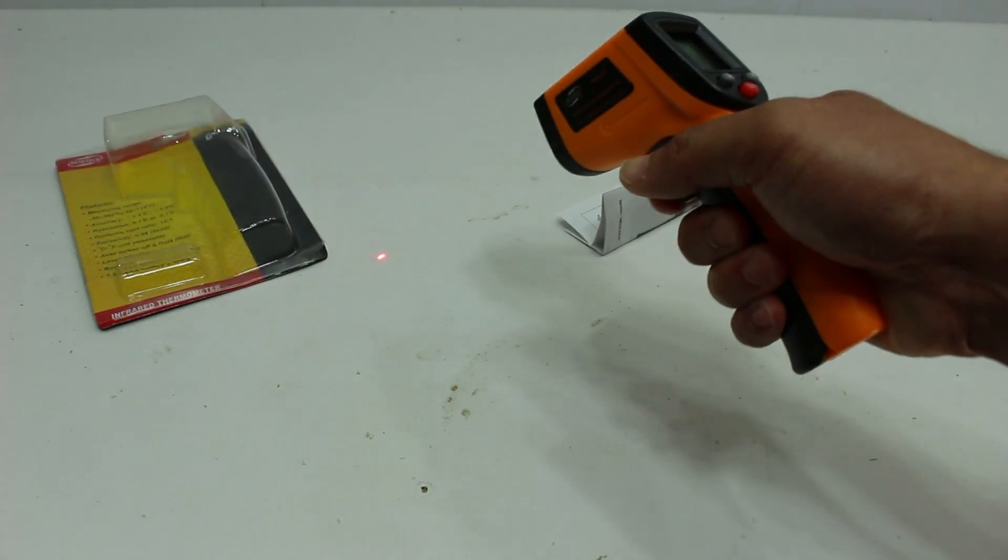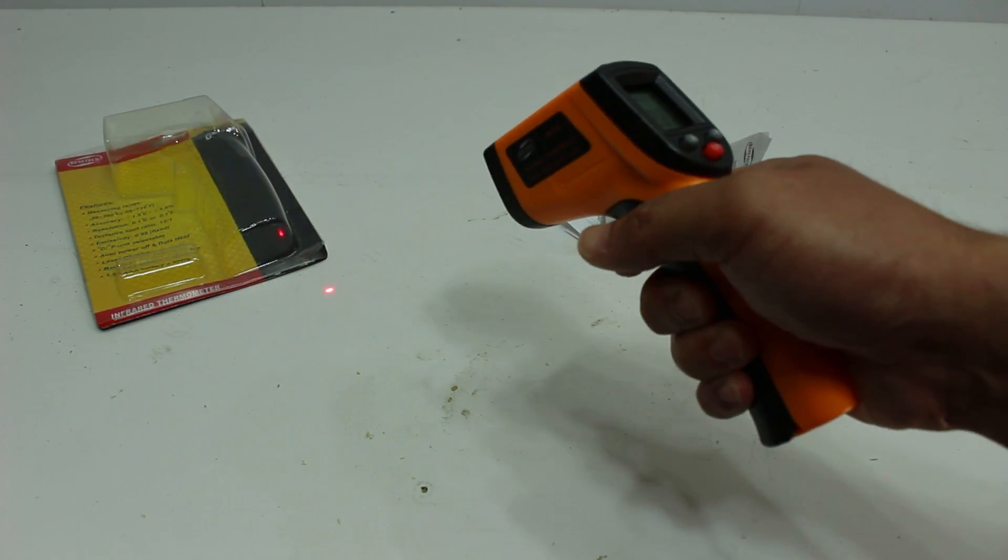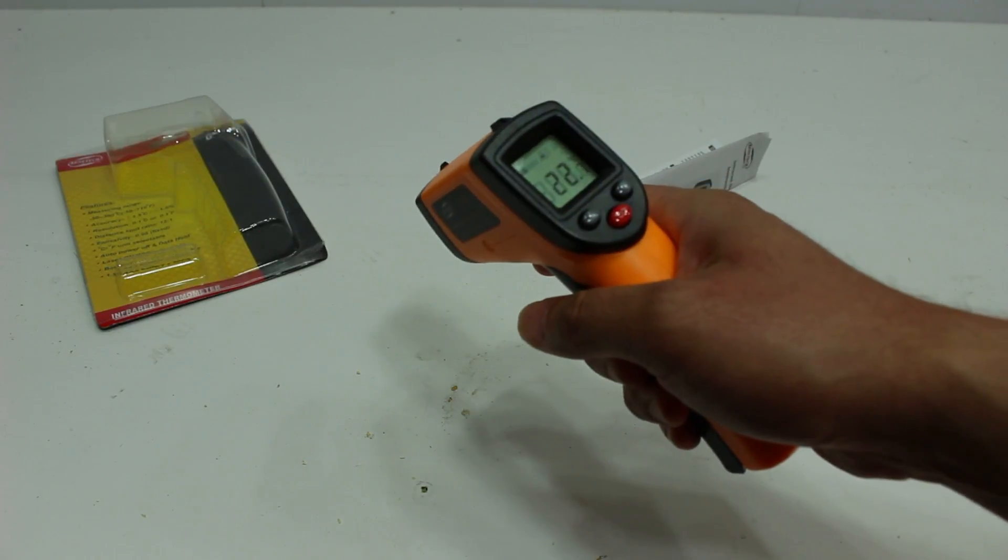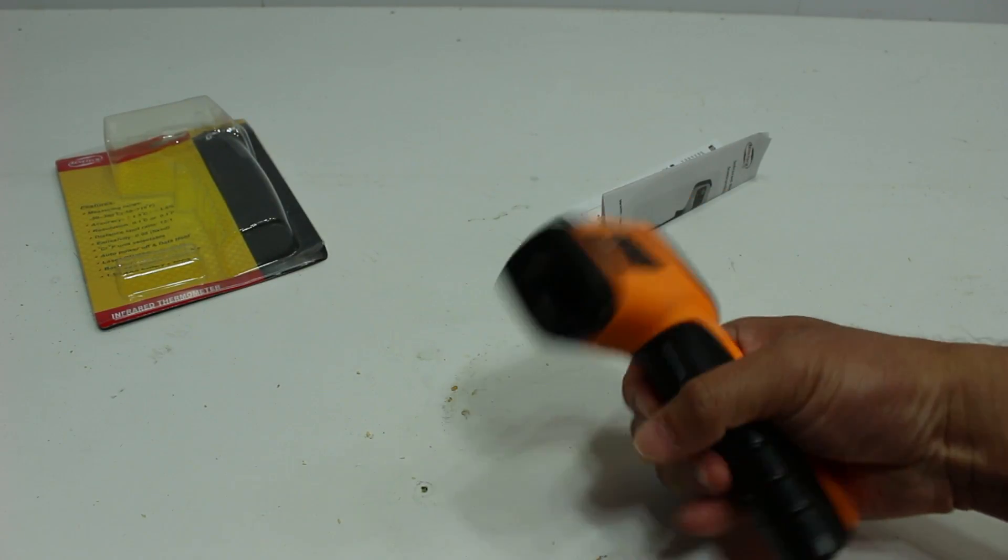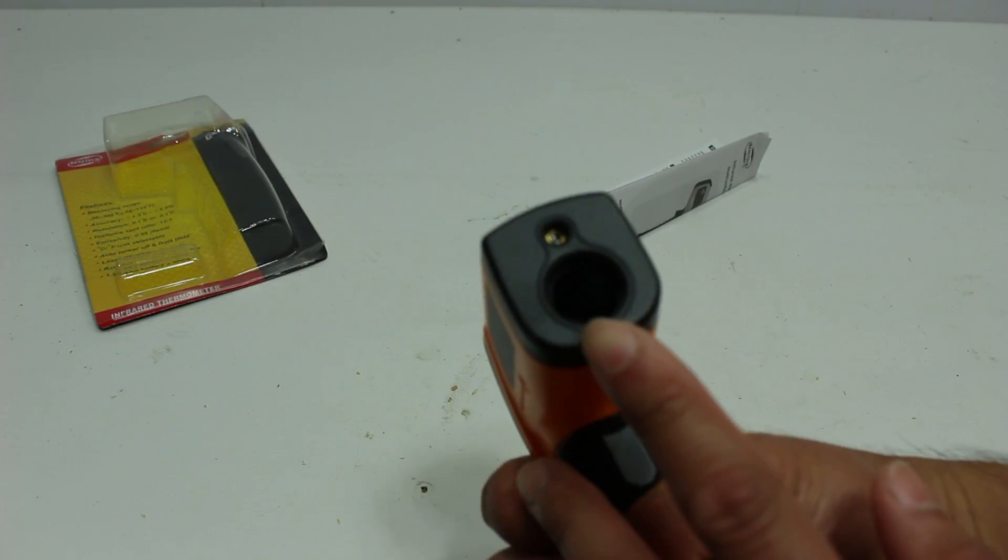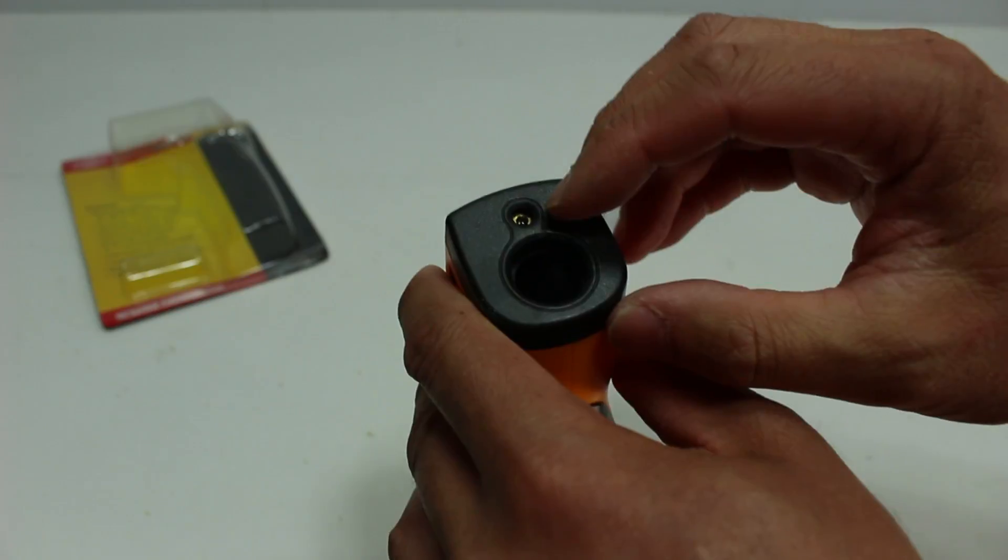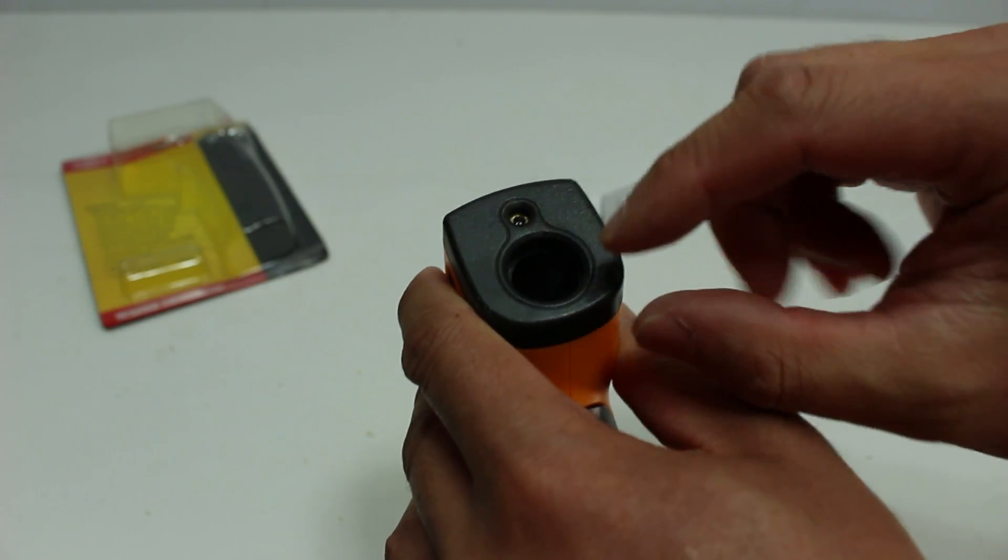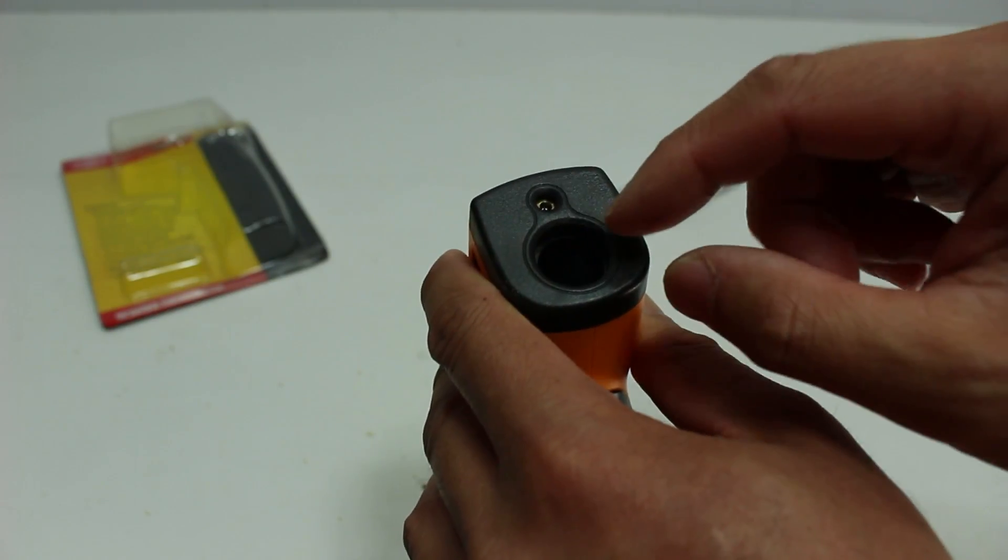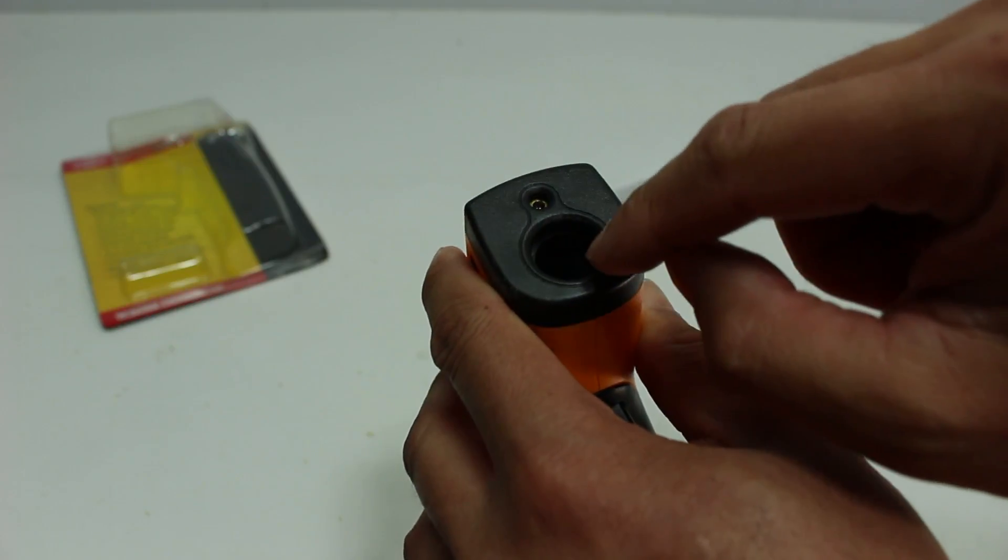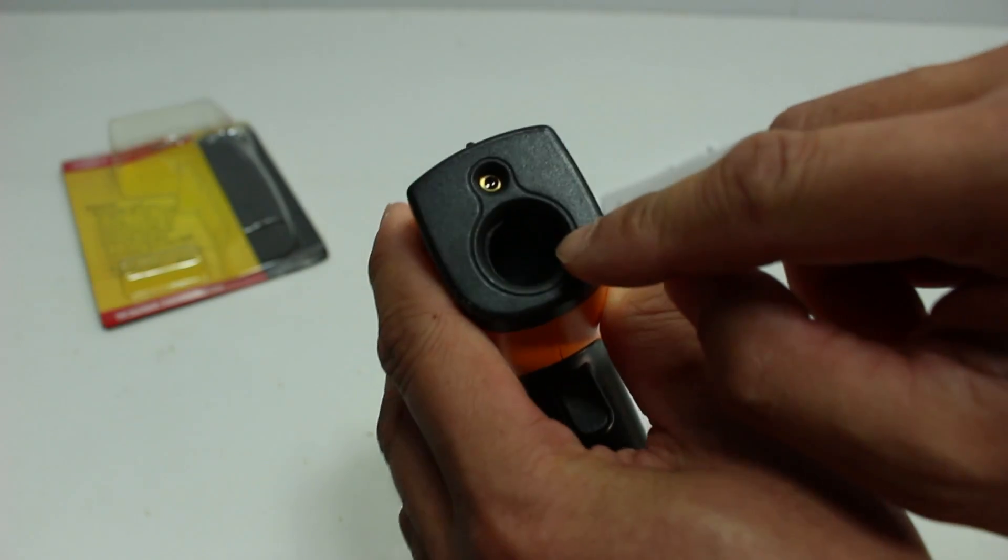On the front, there's a laser pointer to tell you what spot you're actually reading, and I find it fairly accurate. The actual infrared sensor is in here.